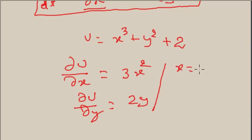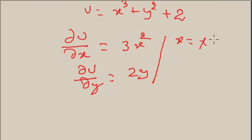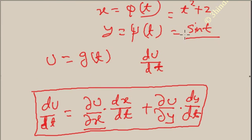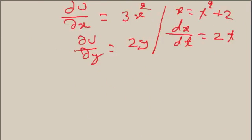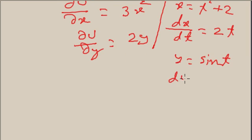X is a function of t, that is x = t² + 2, so dx/dt is equal to 2t. And y is also a function of t, that is y = sin(t), so dy/dt is equal to cos(t).